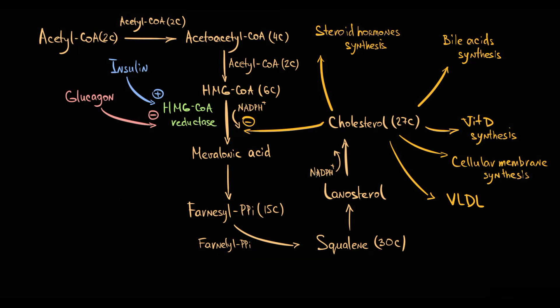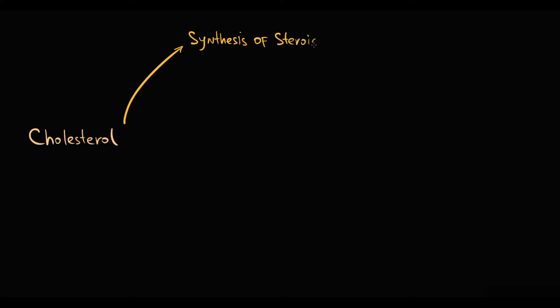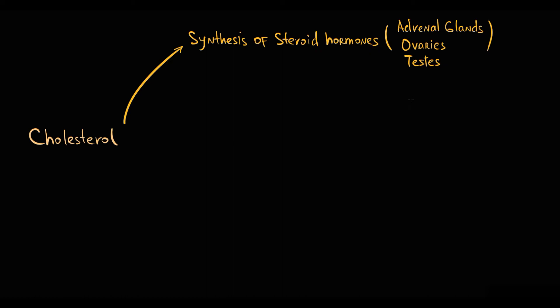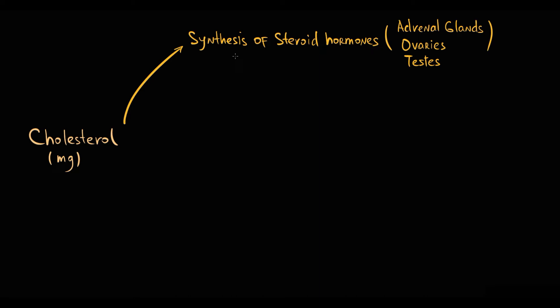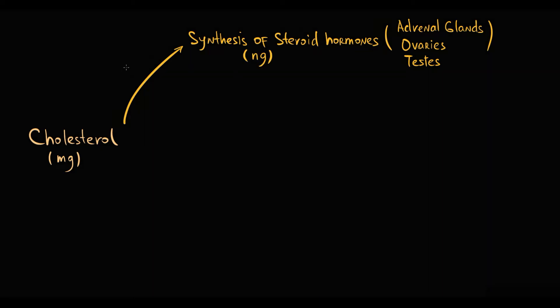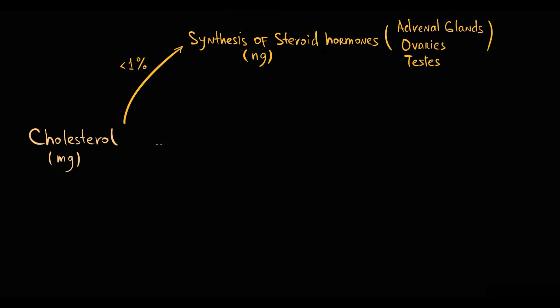To understand what is the major pathway of cholesterol utilization, we have to briefly discuss all of them. Part of cholesterol molecules are used in synthesis of steroid hormones, and the major sites of steroid hormone production are adrenal glands, ovaries, and testis. The total amount of cholesterol in the body can be measured in milligrams, while the amount of steroid hormones is measured only in nanograms. So less than 1% of total cholesterol in the body is used for synthesis of steroid hormones.